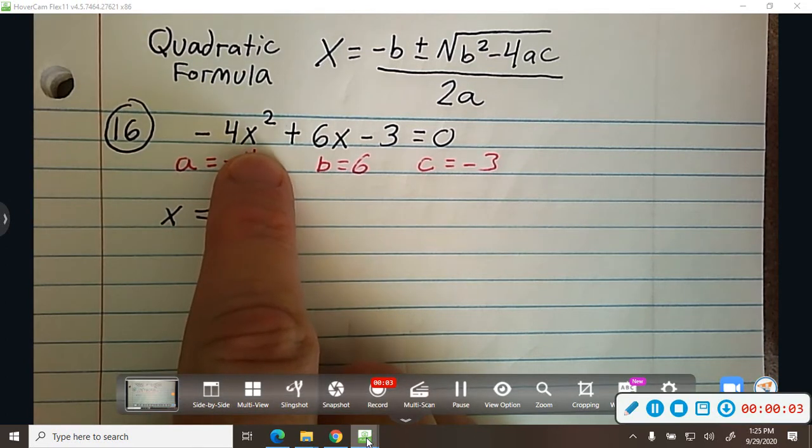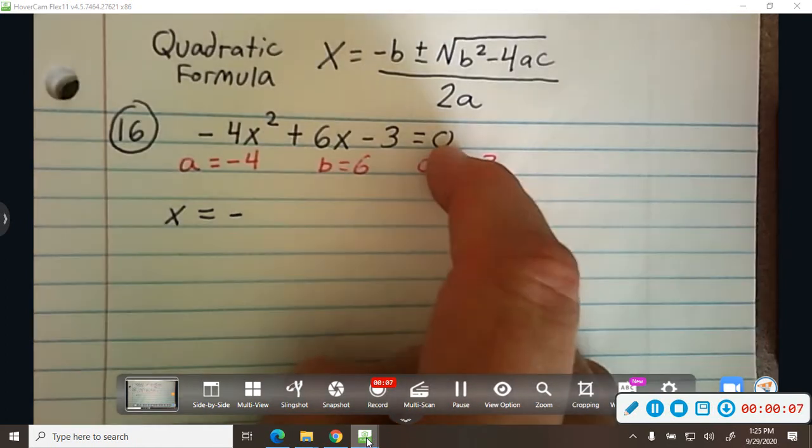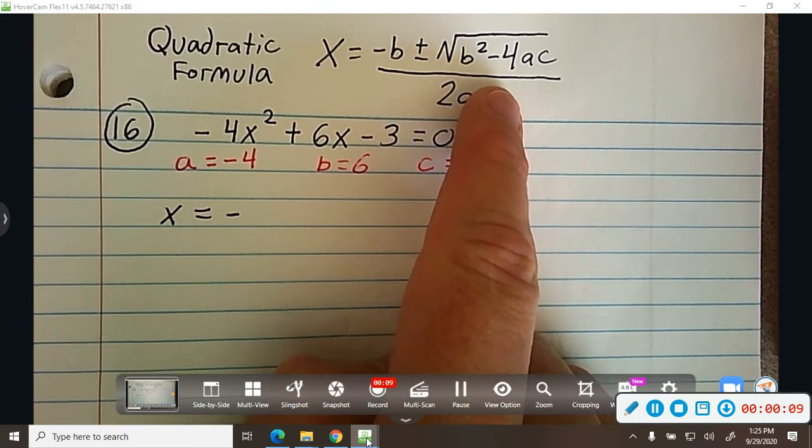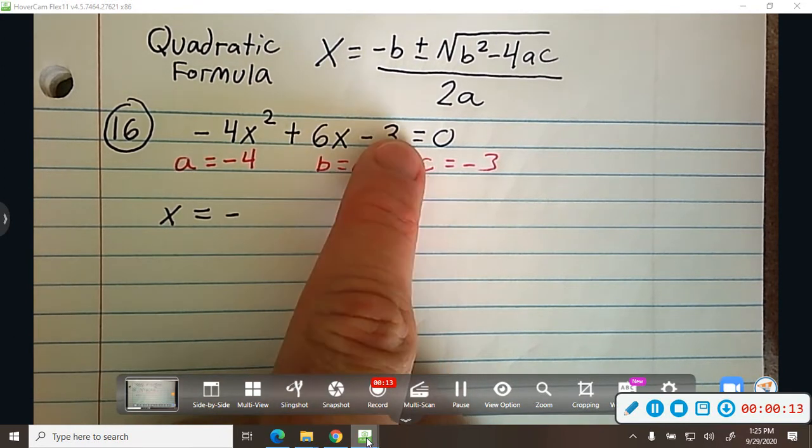So we're solving negative 4x squared plus 6x minus 3 equals 0. We're plugging into the quadratic formula. A is negative 4, B is 6, C is negative 3.